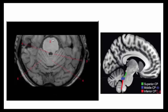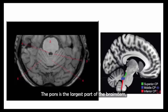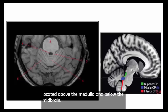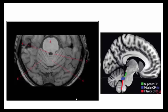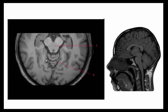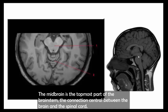This is the pons. The pons is the largest part of the brainstem, located above the medulla and below the midbrain. This is the midbrain on axial view and sagittal view. The midbrain is the topmost part of the brainstem — the connection center between the brain and spinal cord.